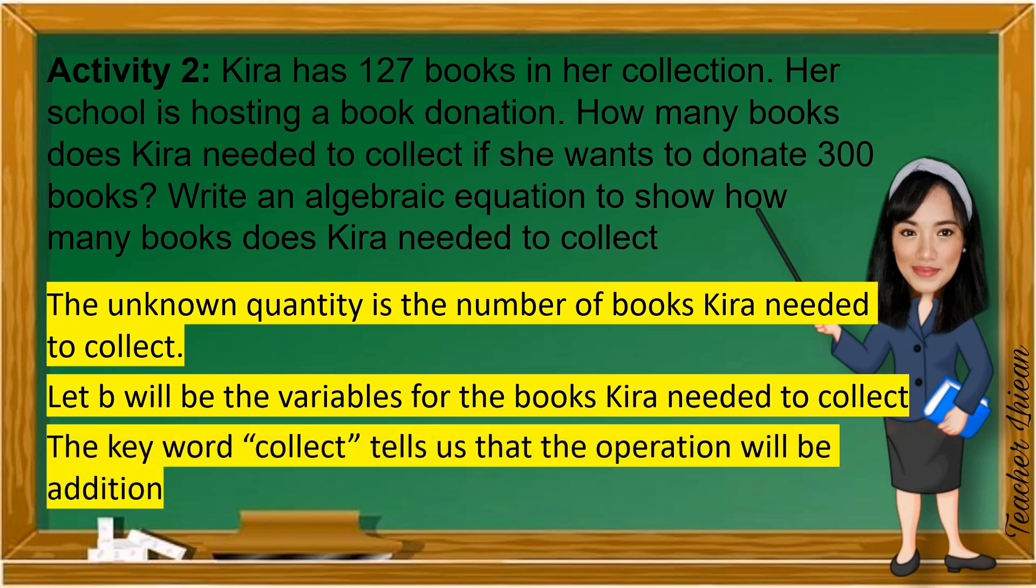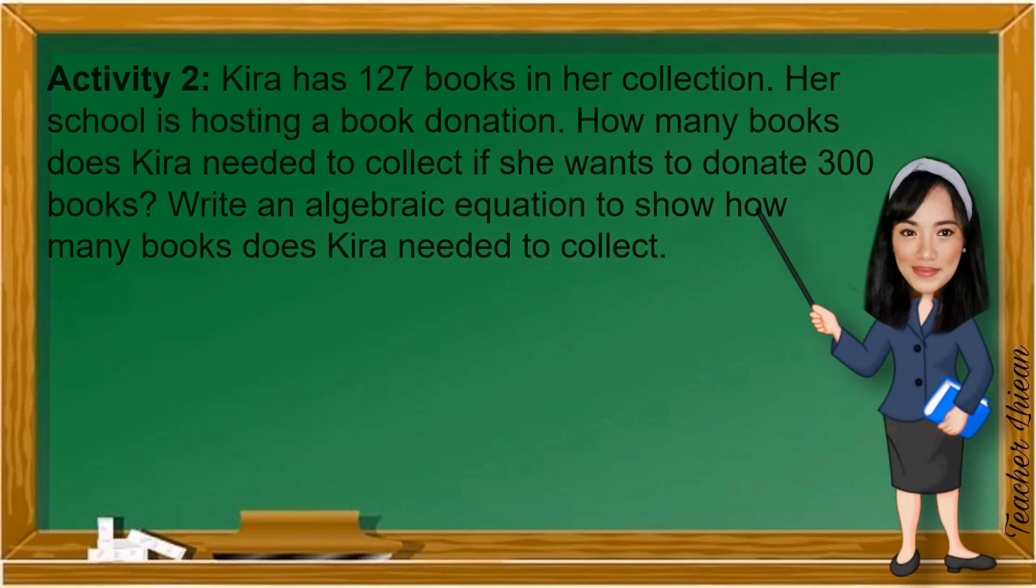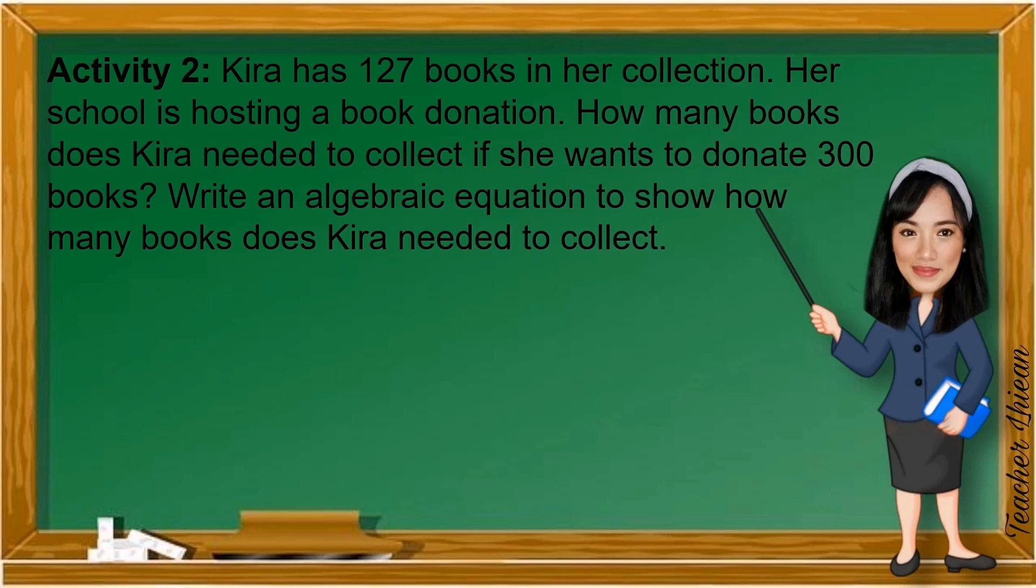Next, look for the keywords in what operation to be used. The keyword collect tells us that the operation will be addition. And next, let us arrange the variable, constant, and operation in proper order based on the given problem to form algebraic equation. So, our equation now will be 127 plus B is equal to 300.